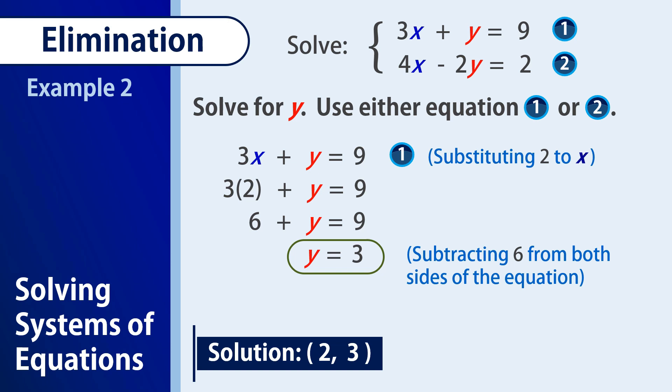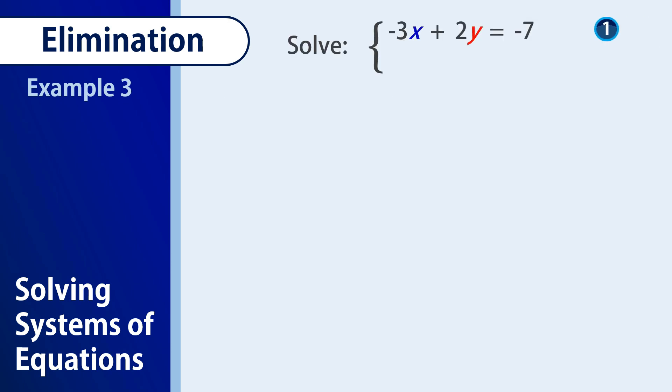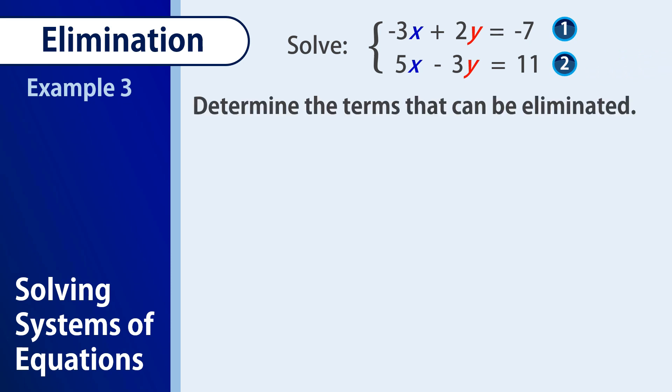That's what we do when our coefficients are not the same. Now, let's proceed to our third and last example. If we have the equations 3x plus 2y equals negative 7, 5x minus 3y equals 11, what can we do here to eliminate a term? Because there's no term here that can be eliminated. In that case, I was thinking of multiplying the first equation by 3 and the second equation by 2.